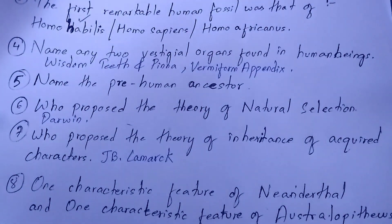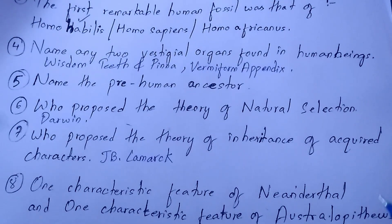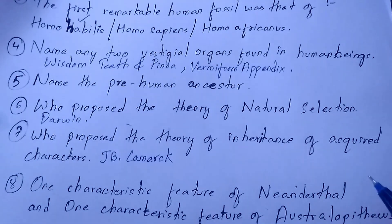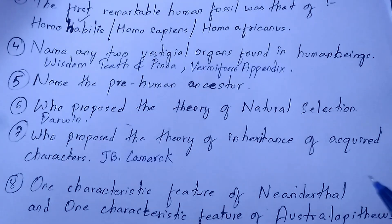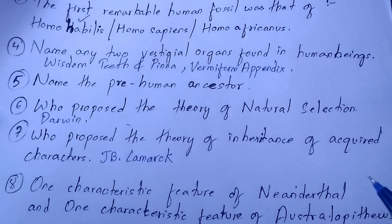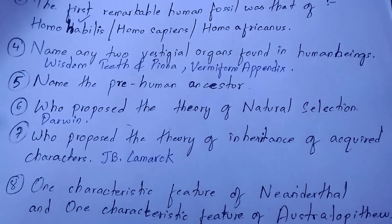Those were all the short questions mostly asked from this chapter. There are also some long questions — Lamarck's theory of inheritance is very important and it is almost certain that if any long question is asked from this chapter, this will be part of it. Darwin's theory of natural selection is equally important. From picture composition, you can expect the picture of industrial melanism of the moth, Biston betularia. If you want a video on industrial melanism concepts, write to us in the comment section.